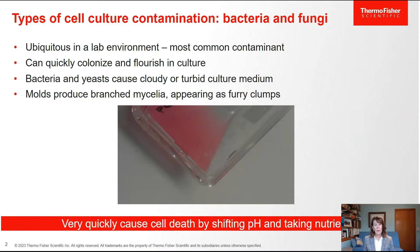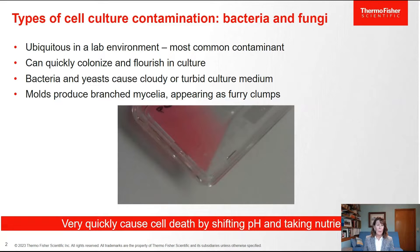Bacteria and fungi are the most common type of cell culture contaminants because they're everywhere — on our skin, in the air around us, in the environment, and they grow so fast. On average, mammalian cells double roughly once per day, but E. coli double once every 20 minutes. So you can see how they can quickly colonize your culture and go crazy growing really fast.